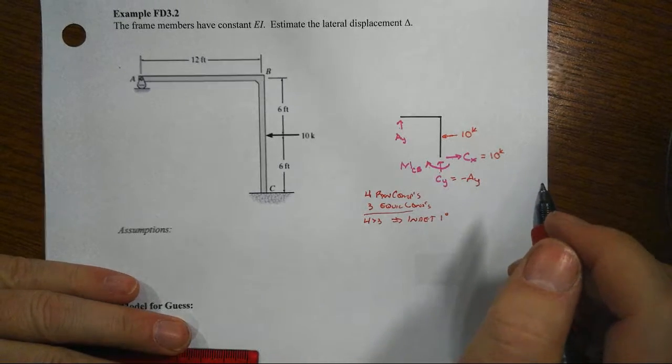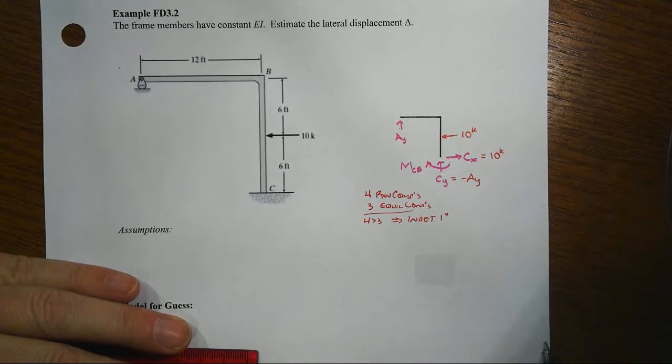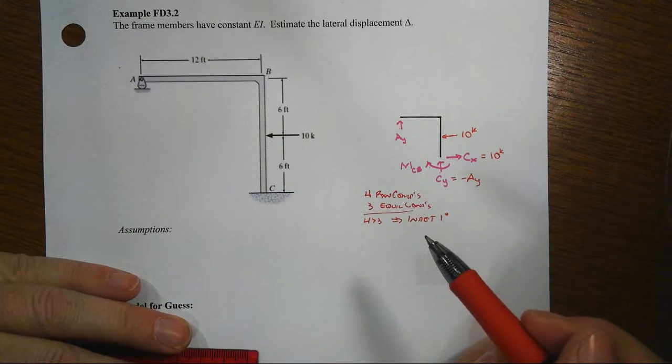So that means it's a little bit more complex than what might happen if we didn't have, for instance, this roller support.